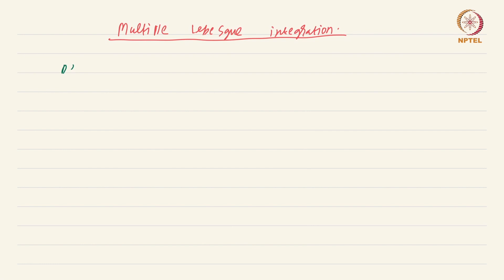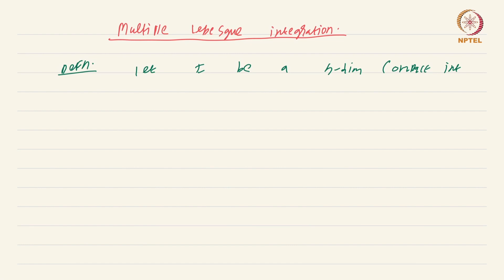We begin with the definition of a step function. Let I be an n-dimensional interval. As remarked in an earlier video, I will not keep repeating 'n-dimensional interval' and sometimes just say 'interval', leaving you to infer from context whether it is an interval in R or in Rn. Let I be an n-dimensional compact interval.